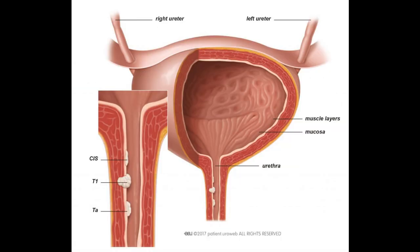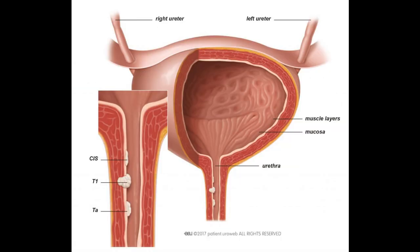The urinary bladder opens into the urethra. The tube-like opening at the bottom of the urinary bladder which passes out the urine is called the urethra. The urethra is 4 centimeters long in females and 20 centimeters long in males.